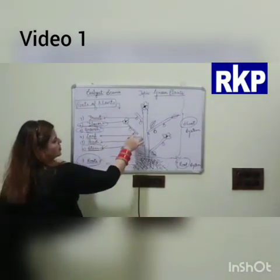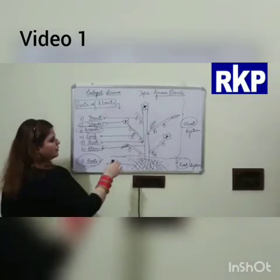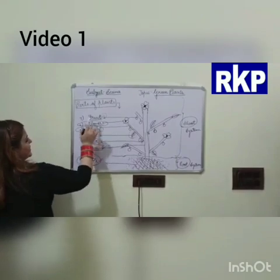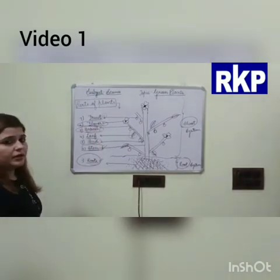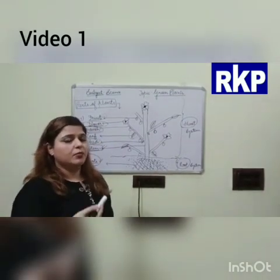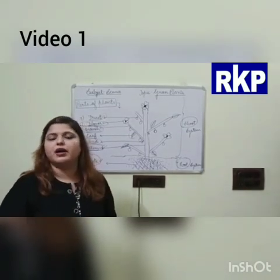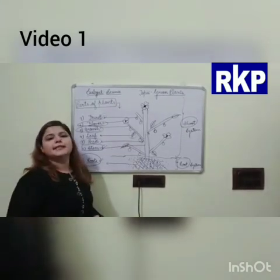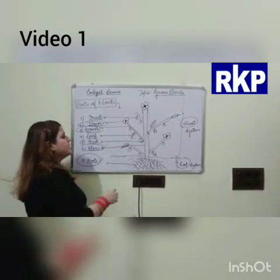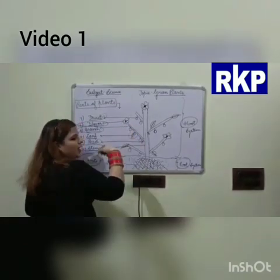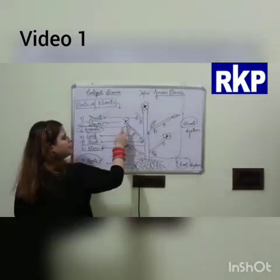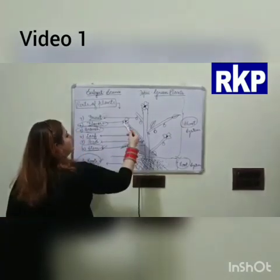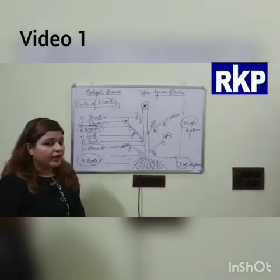Next are branches — the extended parts of the stem which bear flowers, fruits, leaves, buds, and so on. Next is the flower. Flowers are the most attractive and colourful parts of the plant, and flowers contain seeds. When buds grow, they change into flowers, and when flowers grow, they change into fruits.